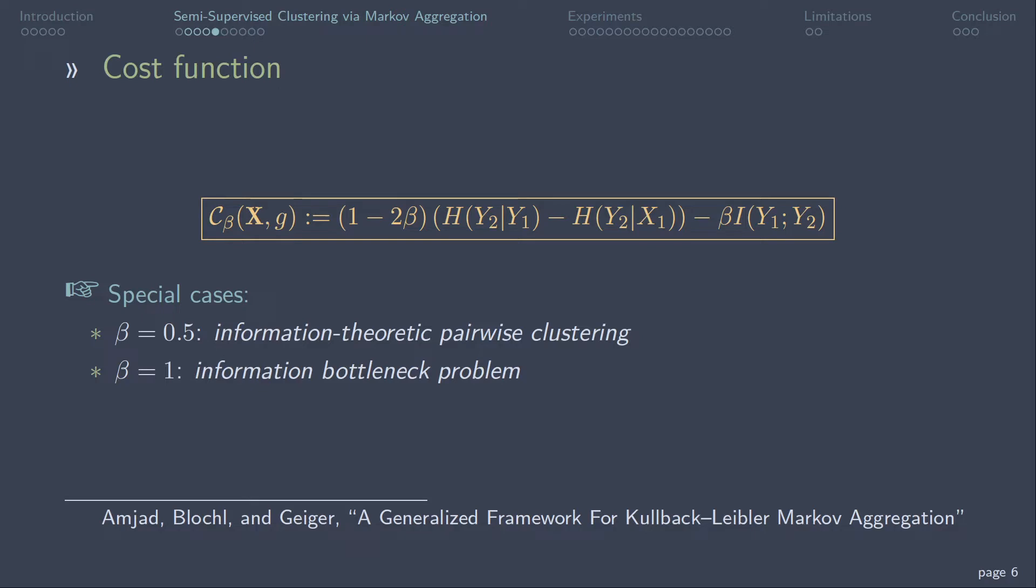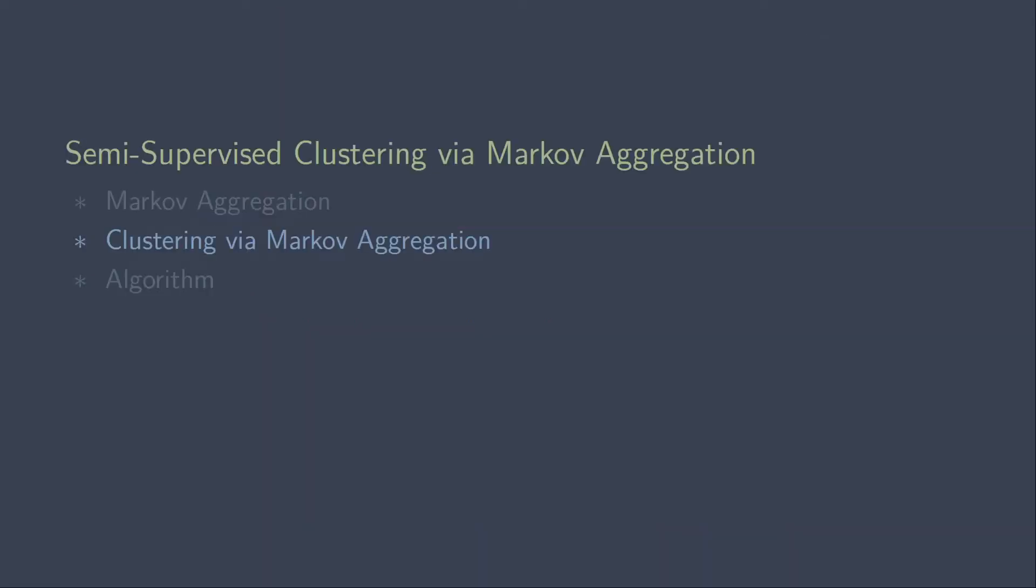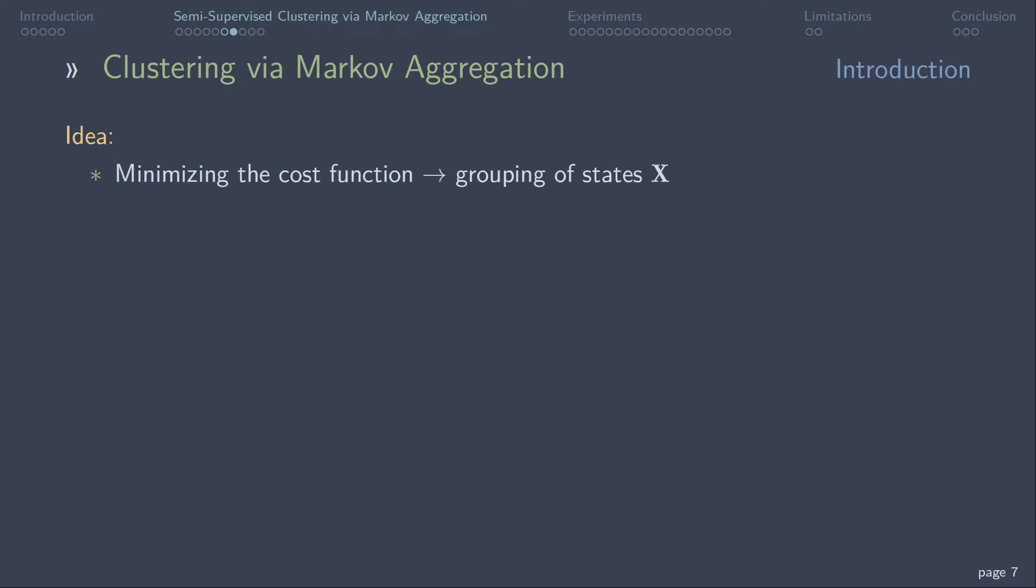Now the question arises how this can be used for clustering tasks. The idea is the following. By minimizing the previous cost function, we achieve a grouping of states of X. This is now used for the grouping of data points. How?